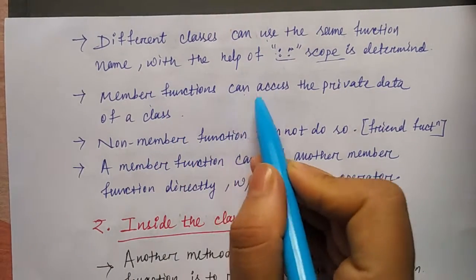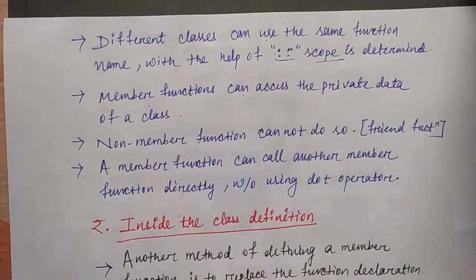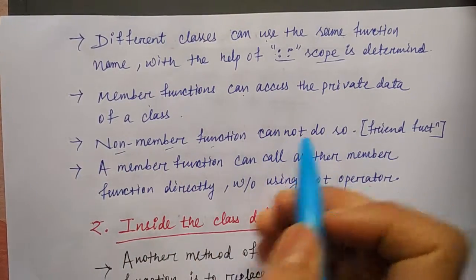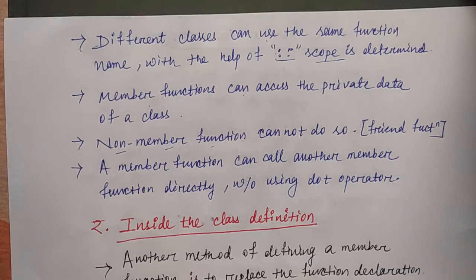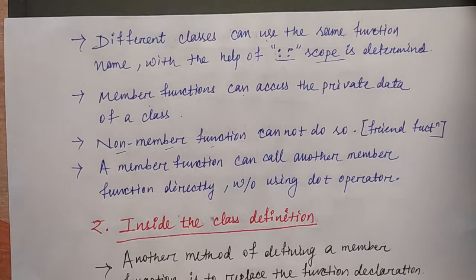A member function can access the private data of a class, but a non-member function cannot. If a function is not within the class, it will not be able to access private data. If it is not a private member function, it will not access private data. In this case we can also use scope resolution.